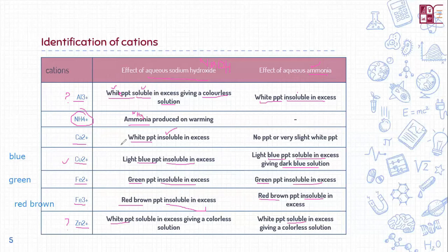You just have to remember the color of the precipitates for copper and iron. For the ammonium cation, ammonia gas is produced. For aluminum and zinc, the distinction depends on the aqueous ammonia reaction, because the reaction is very distinct.